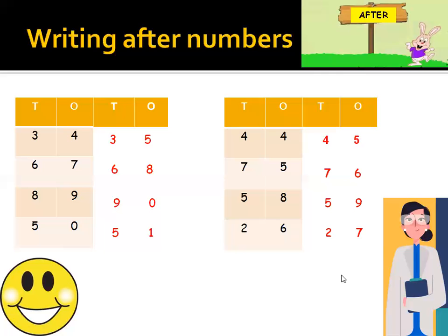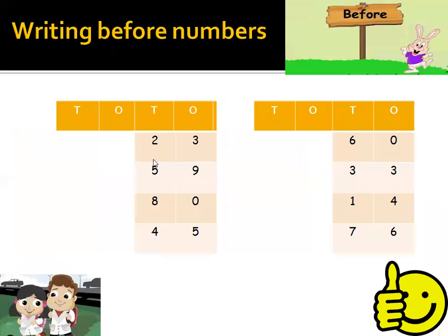So let's move towards before numbers. Before number means the number which comes before the given number, when we count backward. We get the number before. So first example is 23. Before 23, which number will be there? Yes, it's 22.